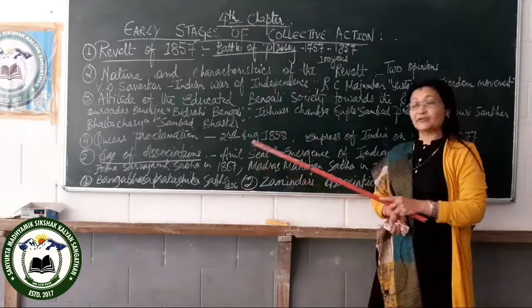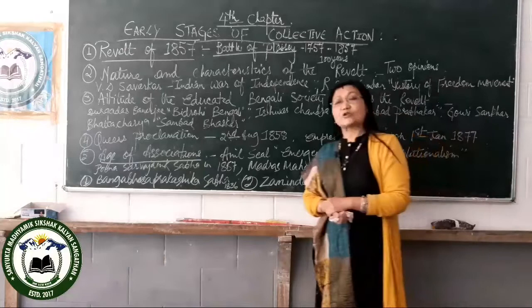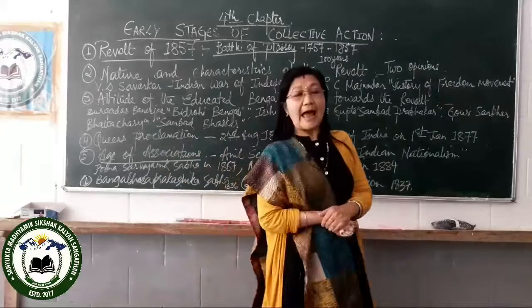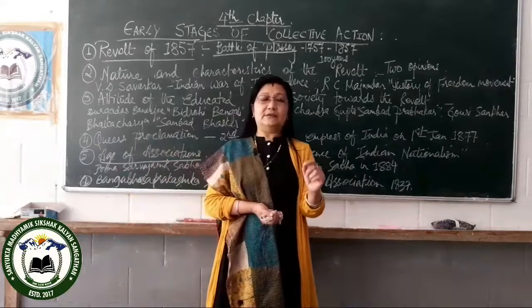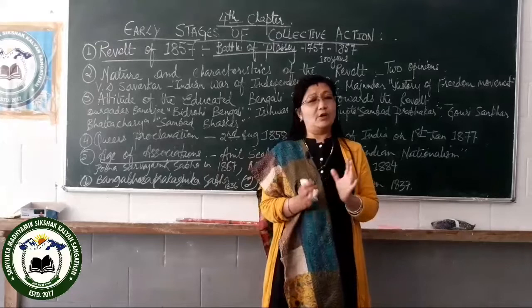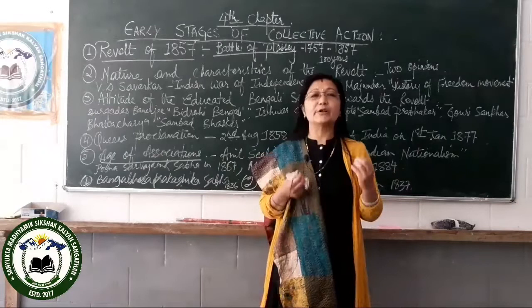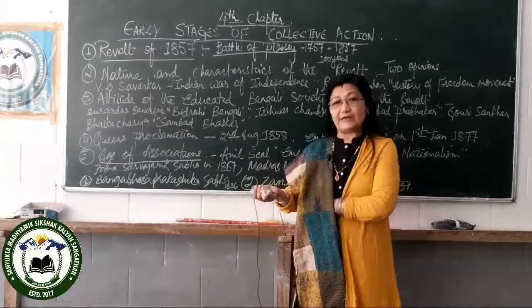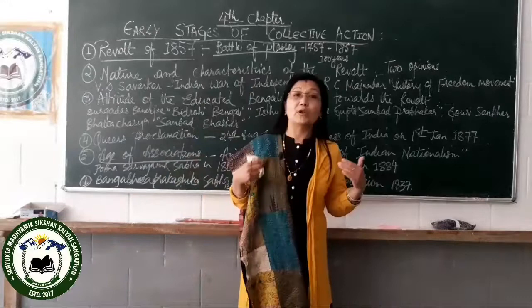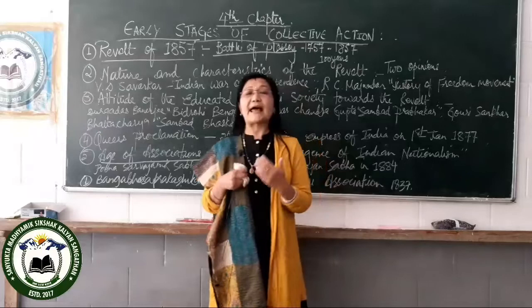From 1757 till 1857 — exactly a hundred years after the British established their hold in India — there was a lot of discontent and dissatisfaction among the people of India. It is said that the Indian people revolted 54 times against the British between 1757 and 1857. These revolts were local in nature, not a united movement, so it was easy for the British to quell them. But the Revolt of 1857 was very large in magnitude and involved the whole of India.